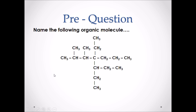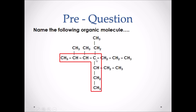First, we have to find the longest carbon chain in the molecule, which is one, two, three, four, five, six, seven carbons. We want to number this carbon chain from the end that gives all branches the lowest value.